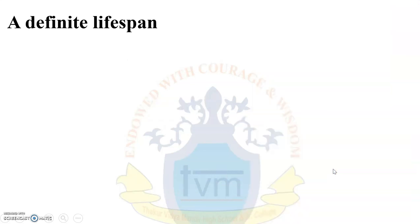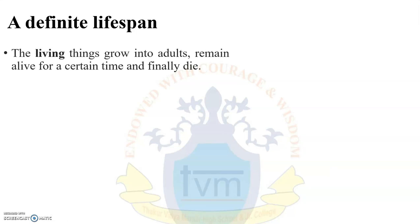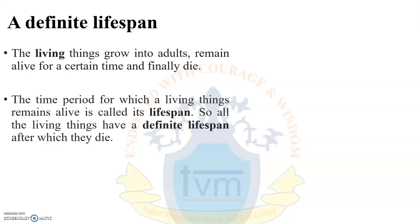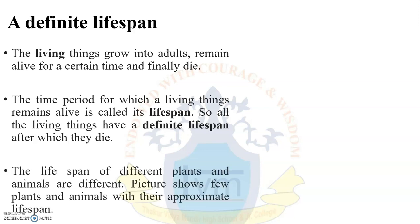The next characteristic is a definite life span. Living things grow into adults, remain alive for a certain time, and finally die. The time period for which a living thing remains alive is called its life span. All living things have a definite life span, after which they die. The life spans of different plants and animals are different.